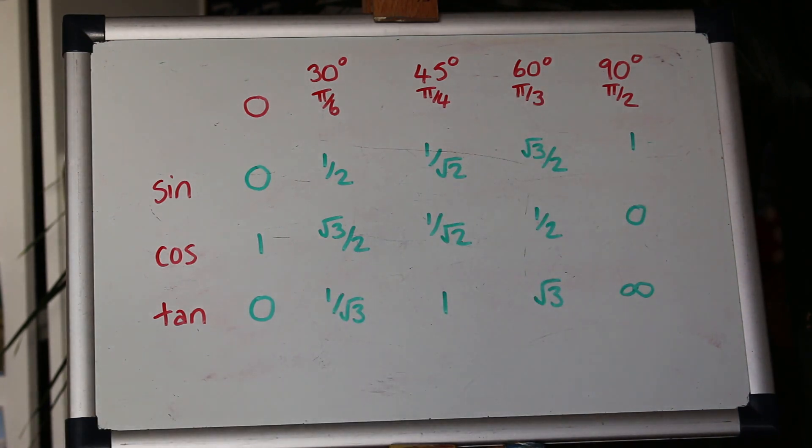There are a few ways of memorizing these. You can either memorize the picture of the table or you could use special triangles or you can use, I think there's a rule using your hands or something but have a google of that and see if you can find a way that helps you.